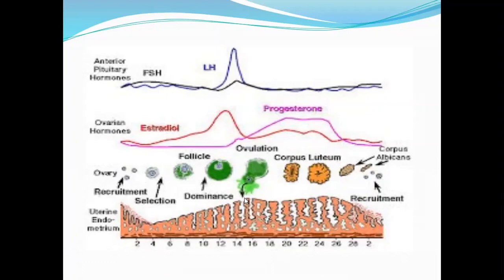If the animal becomes pregnant, the thickness of the endometrial lining will remain in order to protect the fetus.